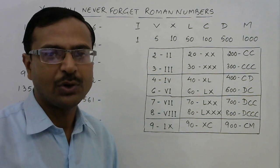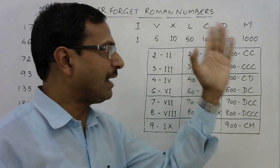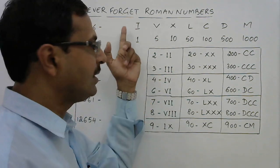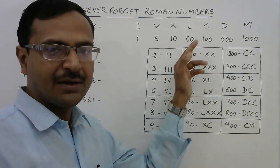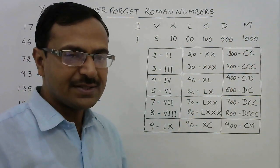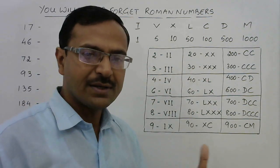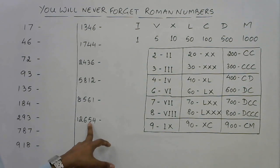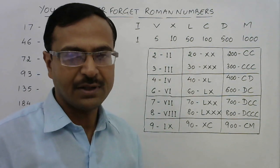The first concept is the standard alphabets we use to represent Roman figures. I stands for 1, V stands for 5, X for 10, L for 50, C for 100, D for 500, and M for 1000. I have taken examples up to 12,654. So: I, V, X, L, C, D, M — that is the order to remember.